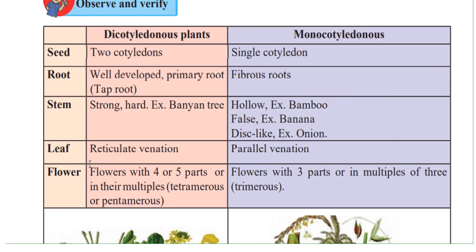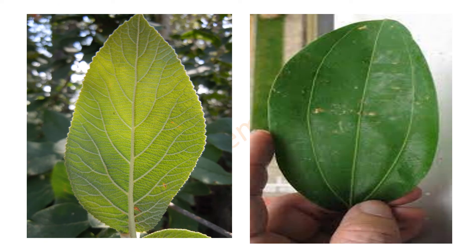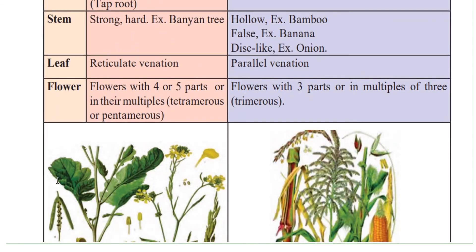Leaves: dicotyledonous plants have reticulate venation, where there is a main midrib and then a network of veins in the leaf. Monocotyledonous plants have parallel venation, where the veins run parallel to each other. Flowers: dicotyledonous plants bear flowers with four or five parts or their multiples — that is, tetramerous or pentamerous. Monocotyledonous plants bear flowers with three parts or multiples of three — that is, trimerous.